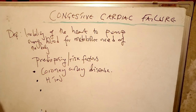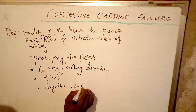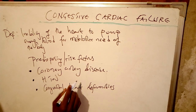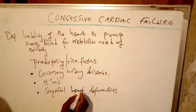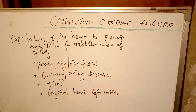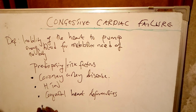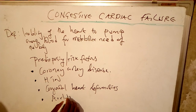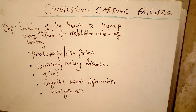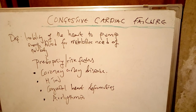We also have congenital heart defects. If someone is born with a congenital defect that damages the structure of the heart, that heart is going to fail to do its work and pump blood out. We also have arrhythmias, which is an irregular heartbeat — sometimes the heart beats fast, sometimes slow — causing the heart to fail to eject blood out into the systemic circulation.